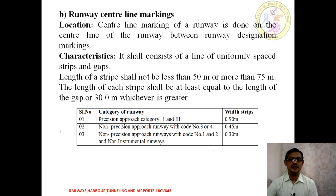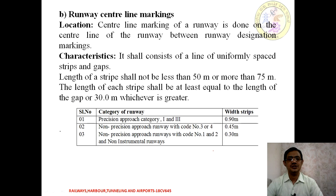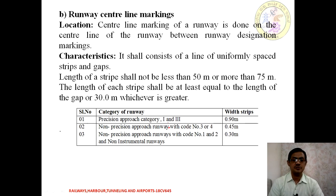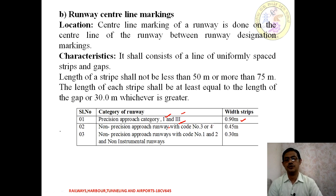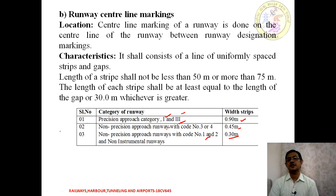Next is the runway centerline marking. The white color line, solid with gaps in between, is marked exactly on the center of a runway. It is provided with a length not less than 50 meters and not more than 75 meters. Each stripe length shall be at least equal to the gap length of 30 meters, whichever is greater. According to ICAO recommendations: Category 1 and 3 precision approach runways should have a minimum stripe width of 0.9 meter; non-precision approach with code number 3 or 4 requires 0.45 meter; non-precision approach code 1 and non-instrumental runways require 0.3 meter width.